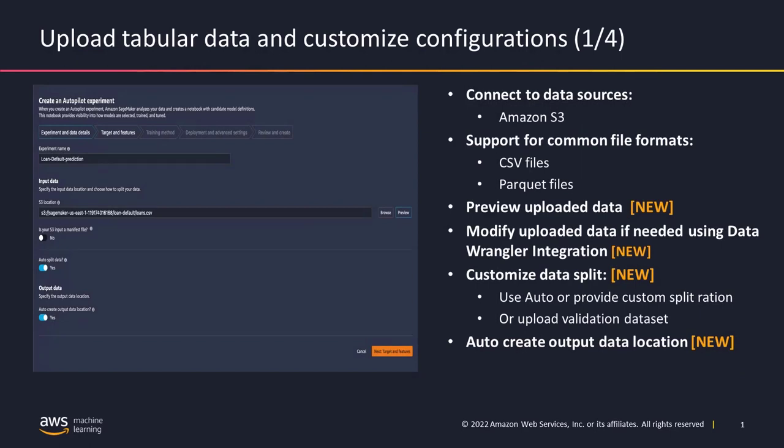Let's get started with what the experience of building an Autopilot experiment actually looks like. The first step is to upload the tabular data. You can connect to S3 data sources — we support CSV format and Parquet format. You get the ability to preview your data and also modify it with Data Wrangler in case you want to eliminate certain columns, break columns into composite features, or apply certain transforms of your own. You can do a custom split or an auto split, and also auto-create your output location.